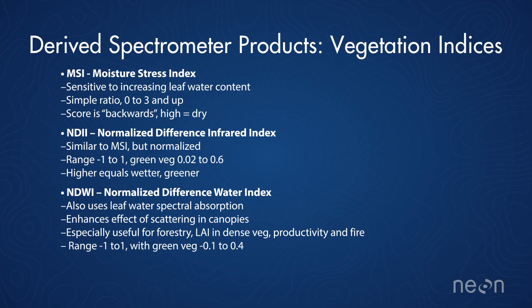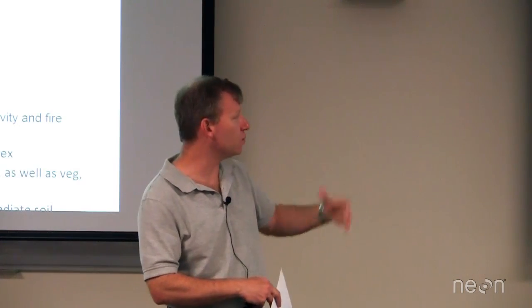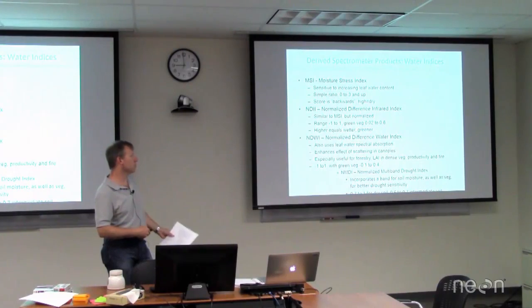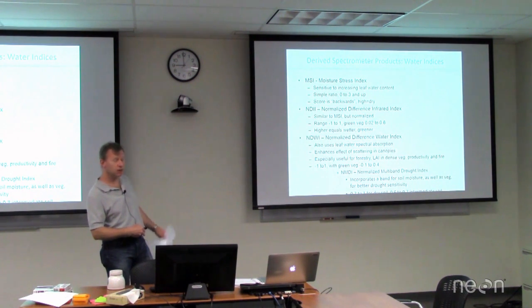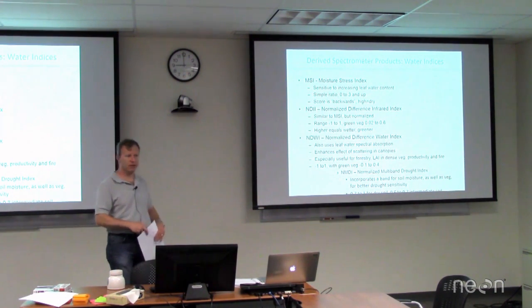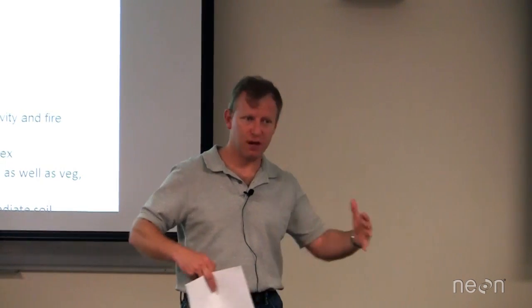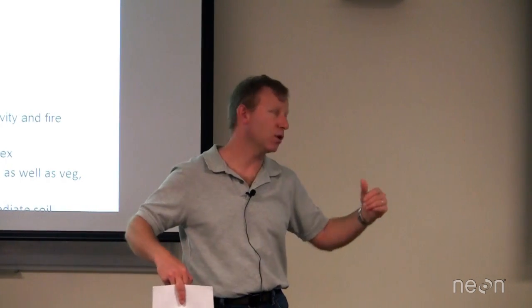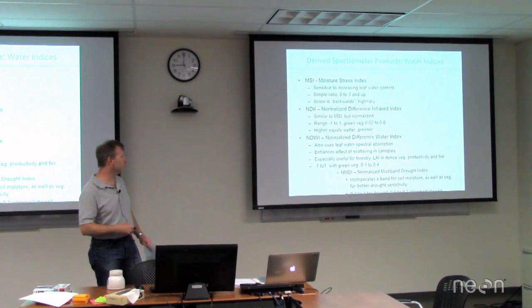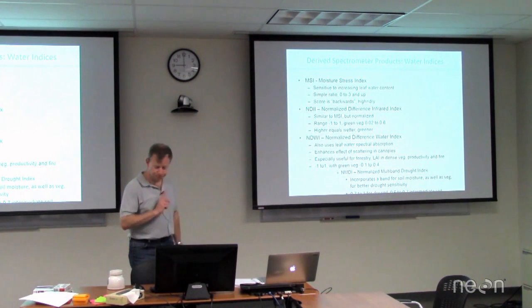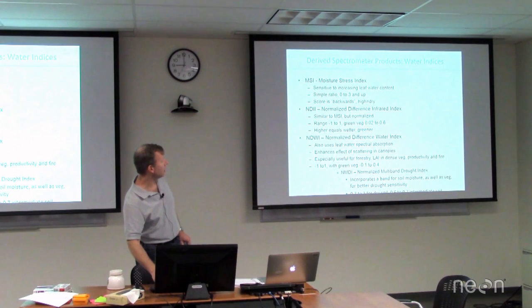Normalized Difference Water Index — you kind of start to see the theme here: everybody wants it normalized, you want two or maybe three bands, this minus that over this plus that. It keeps them very comparable and much easier to use. This goes in for the actual spectral water absorption — that part of the spectrum where, if there's water, there's a feature that absorbs the photons. It also helps in terms of working with the scattering you'll see in canopy studies, and it's often used in conjunction with LAI. All of these go into productivity and fire estimates. Green veg ranges about negative 0.1 to about 0.4.